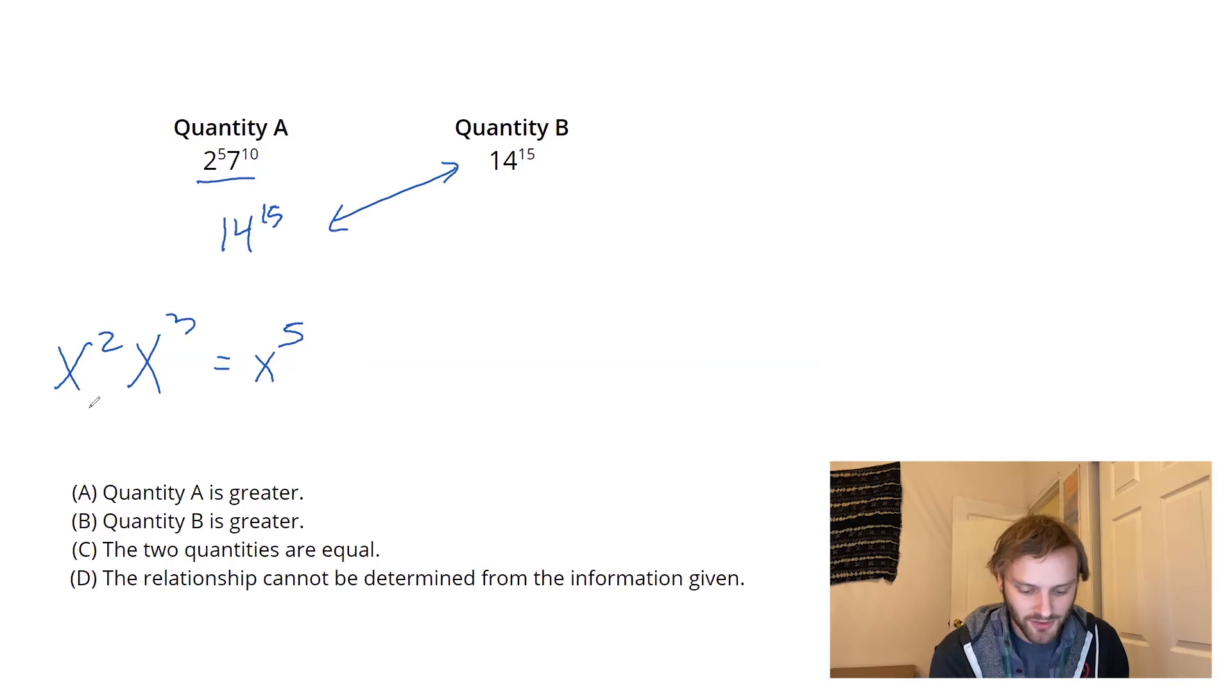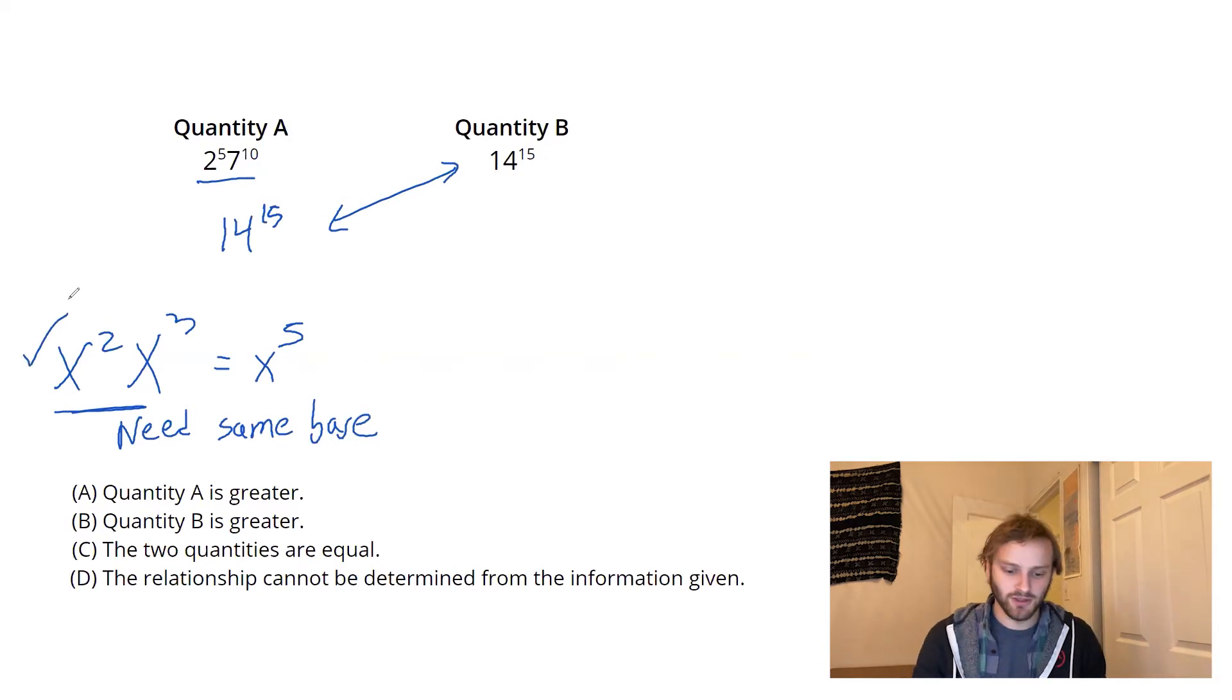Actually, no, because these rules, these main exponent rules, we need the same base. So what we did here with x squared times x cubed, that's all good. But this is no good, because they're not the same base. 2 and 7, I can't multiply them together and add those exponents together. I can only add those exponents if I have the same base to begin with.